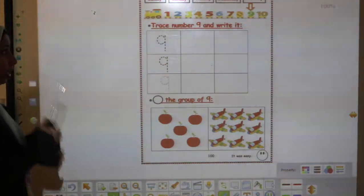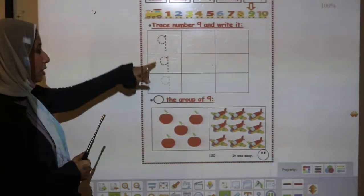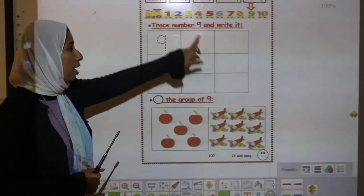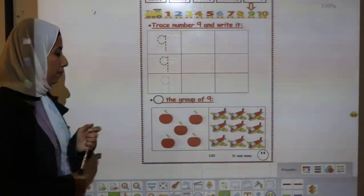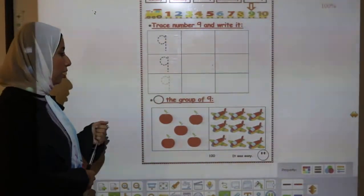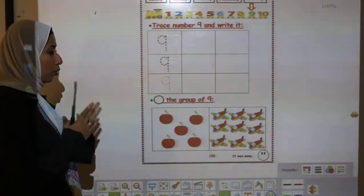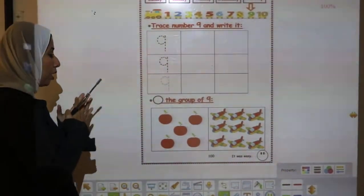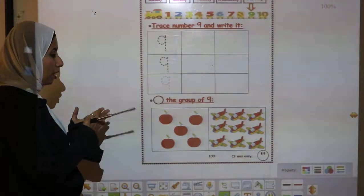Here in this page we will trace number 9 and then try to write number 9 inside these boxes. Then here, what is this question? Here I will make a circle around group of 9. So, I will count, count first, then I will make a circle.